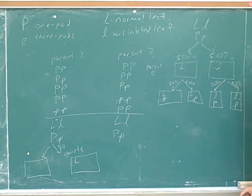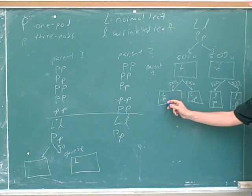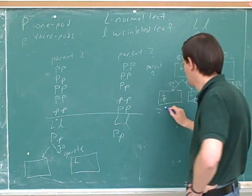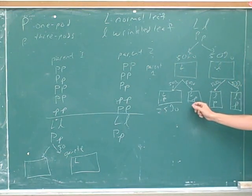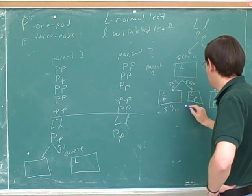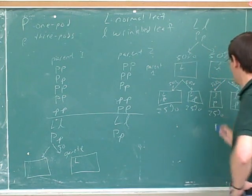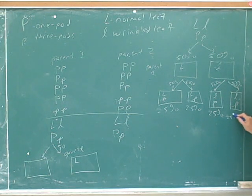So what percentage of the gametes would have a capital L and a capital P? 25% — because that's 50 times 50. And 50 times 50 gives a 25% chance of having capital L and lowercase p, a 25% chance of having lowercase l and capital P, and a 25% chance of having lowercase l and lowercase p.